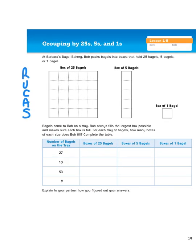So let me re-read this problem. It says, at Barbara's Bagel Bakery, Bob packs bagels into boxes that hold 25 bagels. That might be important to know. 5 bagels, or 1 bagel. Bagels come to Bob on a tray. Bob always fills the largest box possible, and he makes sure that each box is full. For each tray of bagels, how many boxes of each size does Bob fill? Complete the table.